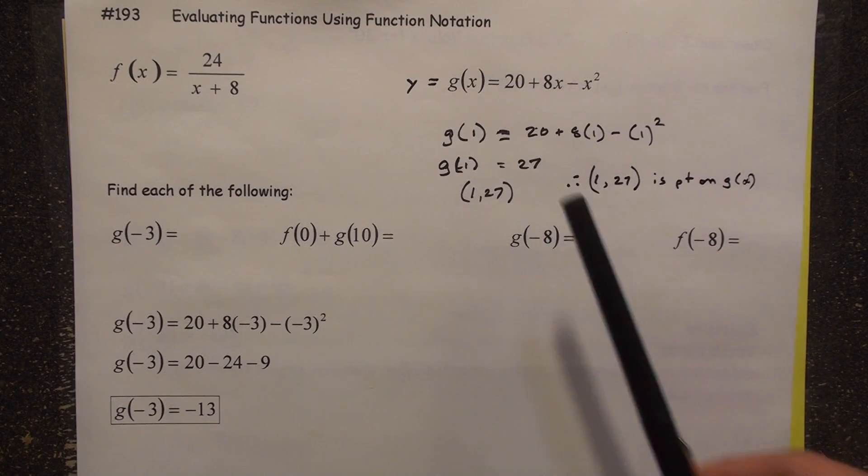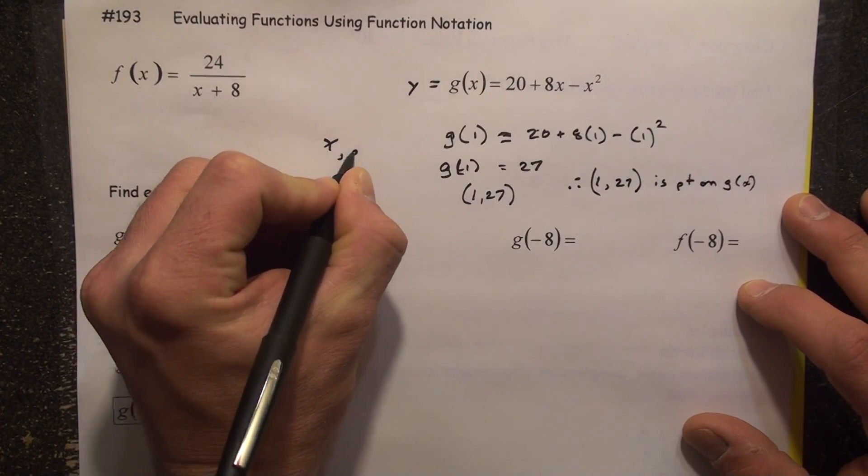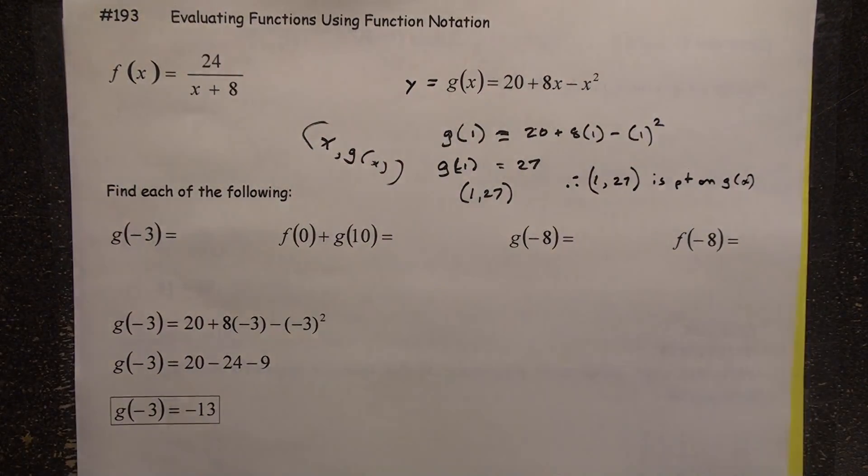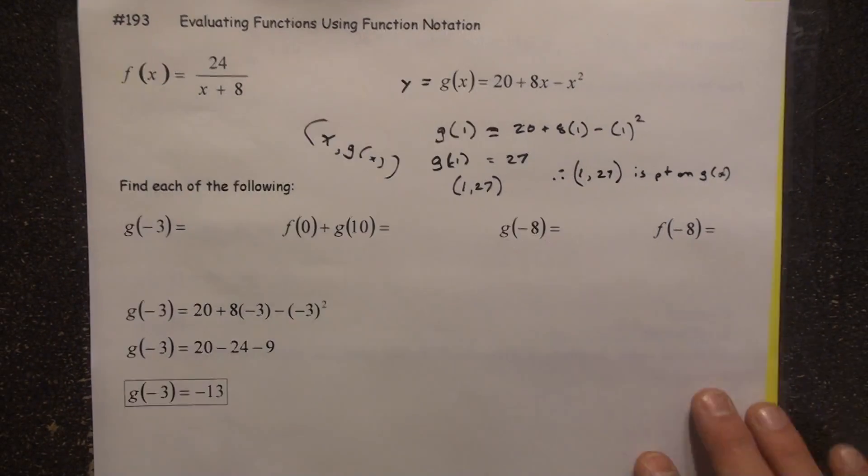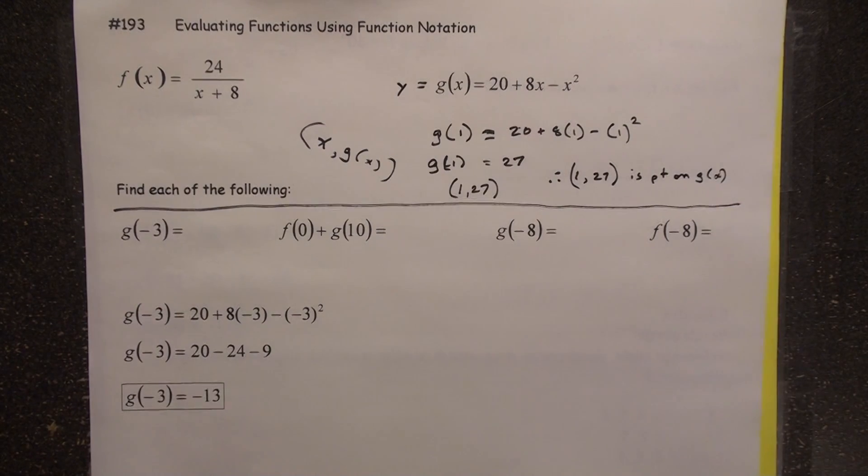So the 1 is the x, the 27 is the y. It's pretty cool. So what we could pretty much say is that x comma g of x would be the x comma y. But nonetheless, let's go ahead and continue here with the video with these four function values.